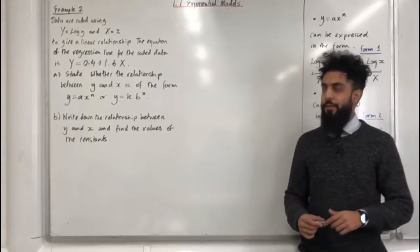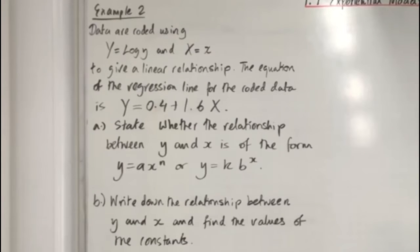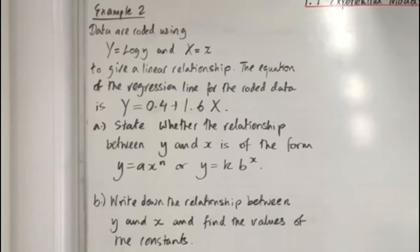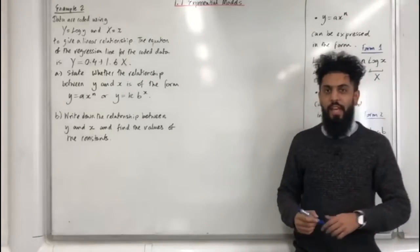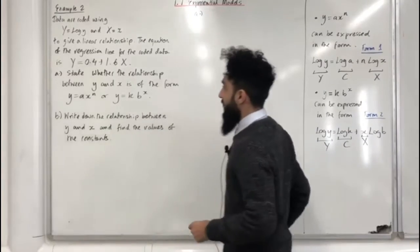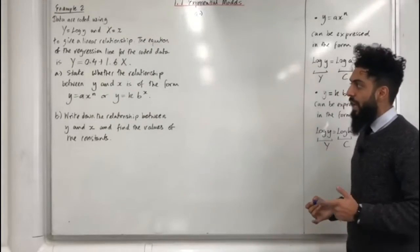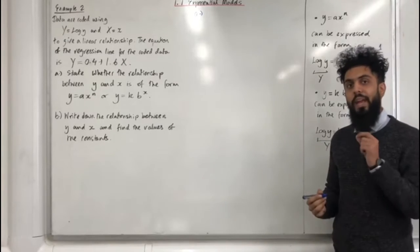Let's have a look at example number two. Data are coded using capital Y equal to log y and capital X equal to x to give a linear relationship. The equation of the regression line for the coded data is capital Y equal to 0.4 plus 1.6 capital X. Part A: state whether the relationship between y and x is of the form y equal ax to the power n, or y equal kb to the power x.